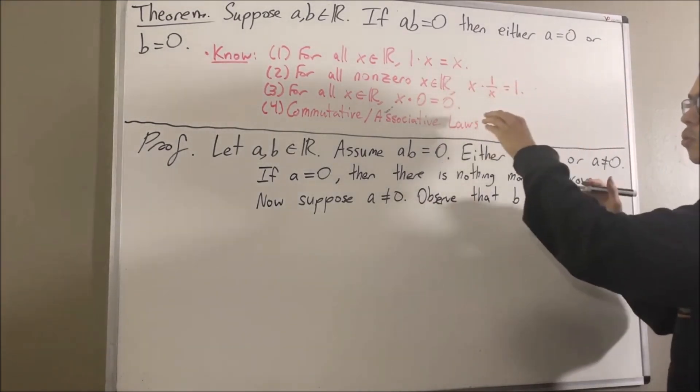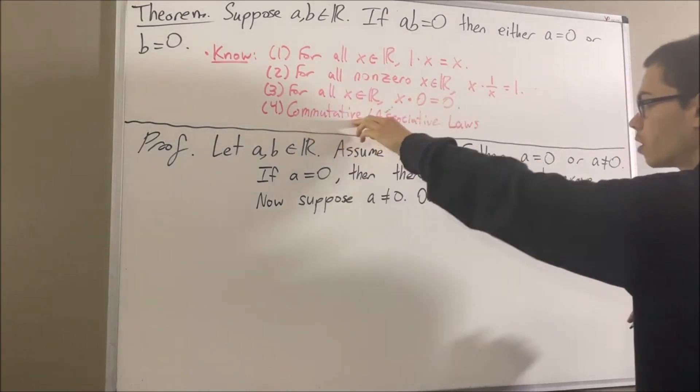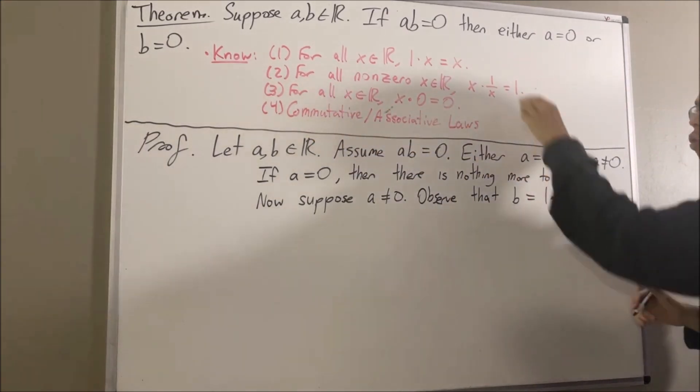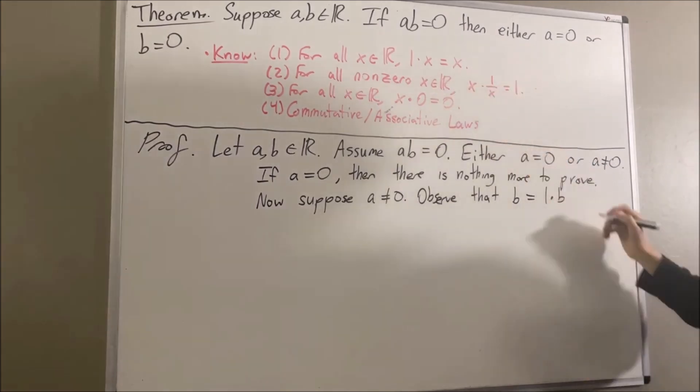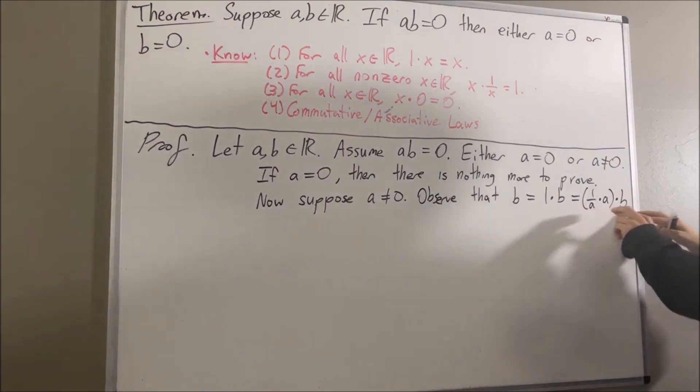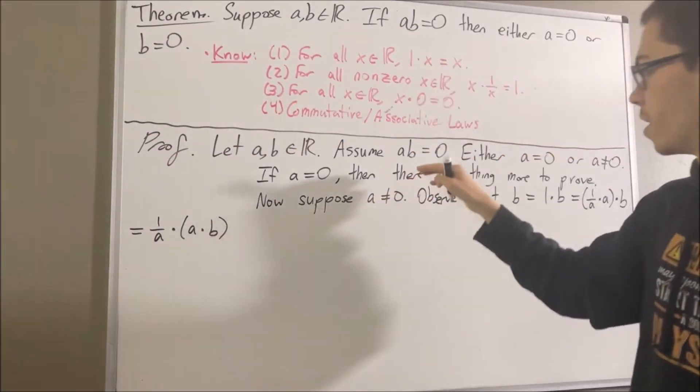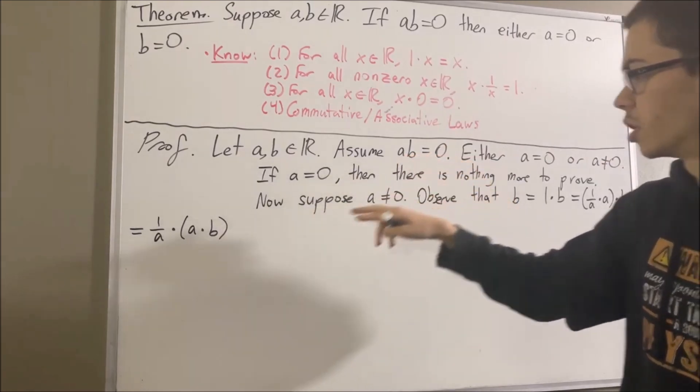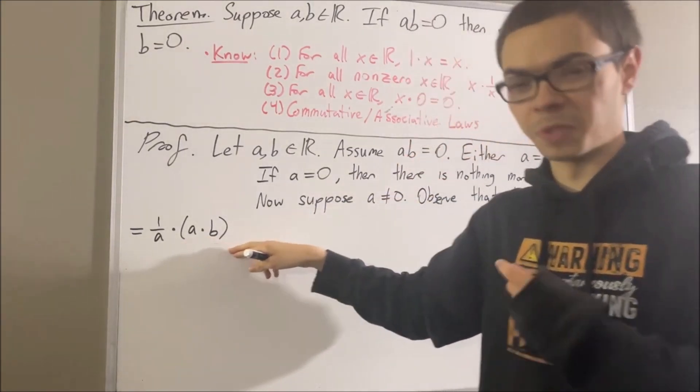But you know what? I'm actually going to immediately apply the commutative law. And I'm going to replace 1 with 1 over A times A. At this point, we're going to apply the associative law to move the parentheses around the A times B. But remember, A times B is equal to 0. So we can replace this parentheses here with 0.